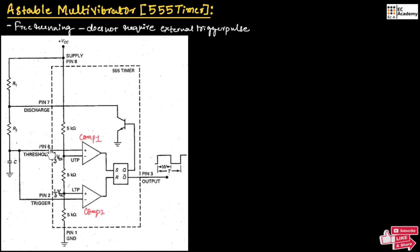Pin number 6 is the threshold, which is input to a non-inverting comparator, and pin number 2 is the trigger, which is input to an inverting comparator. Let us consider the non-inverting comparator as comparator 1 and the inverting comparator as comparator 2. We have a SR flip-flop with output Q and Q bar, where Q is connected to the base of the transistor and Q bar is connected to the output stage.